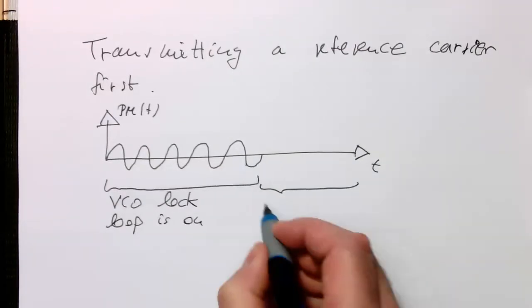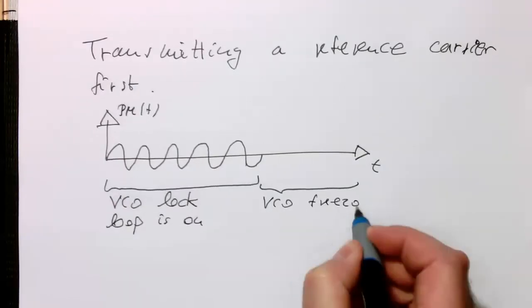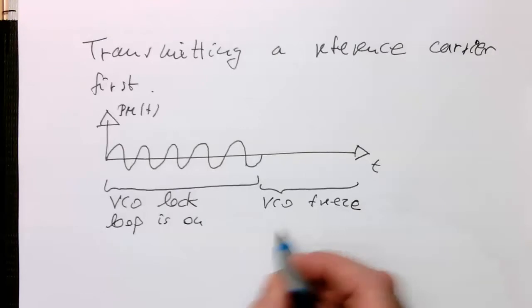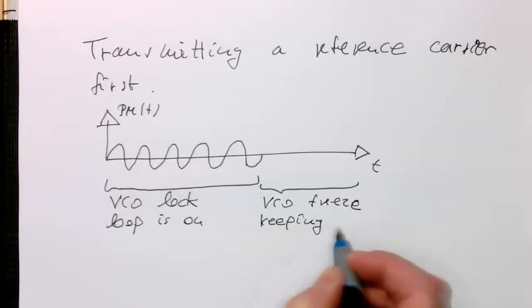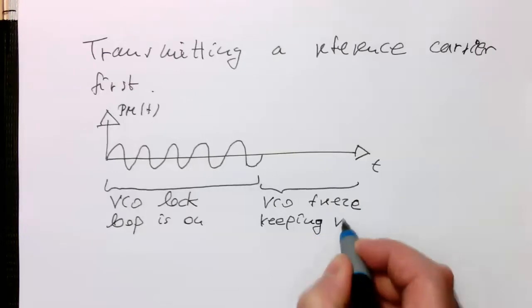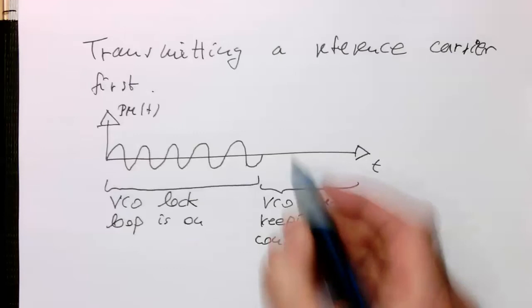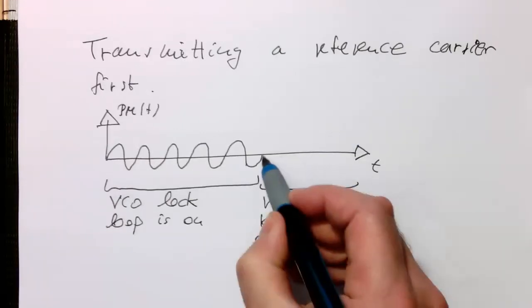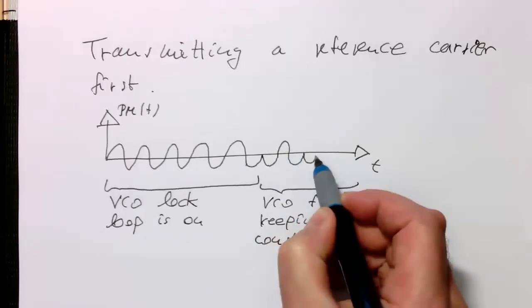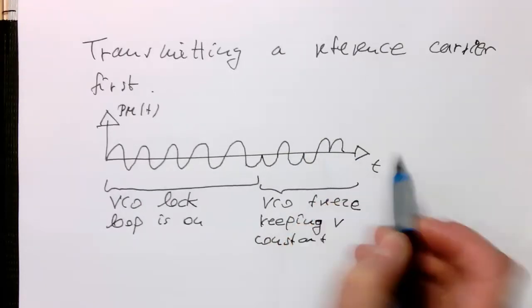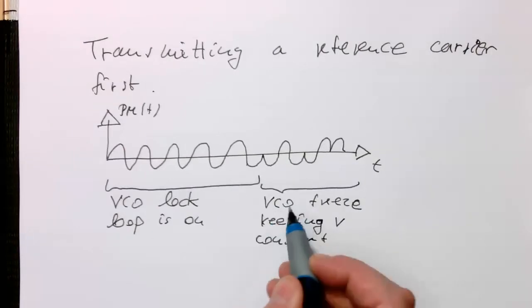the rest of the period here, we just do a VCO freeze, where we are just keeping V constant. And then here we can do loads of phase changes. And the VCO won't be messed up with that.